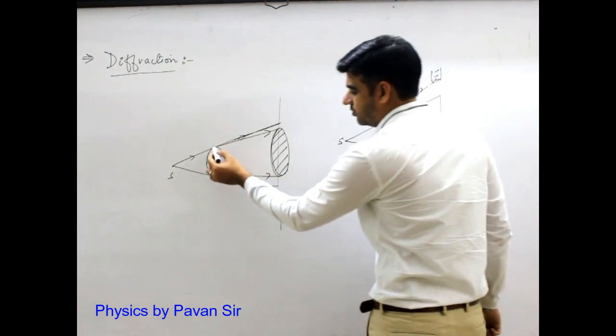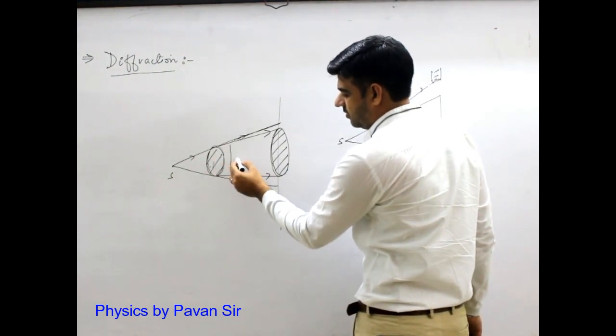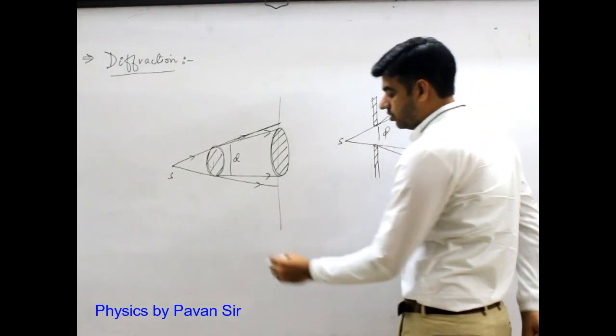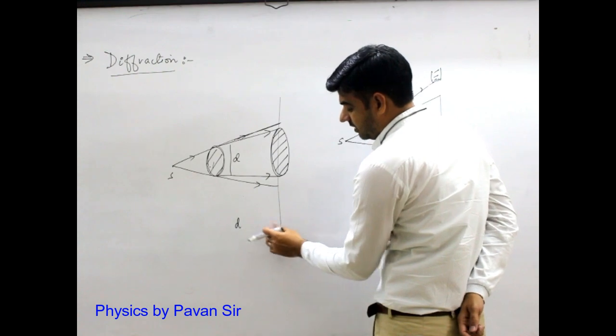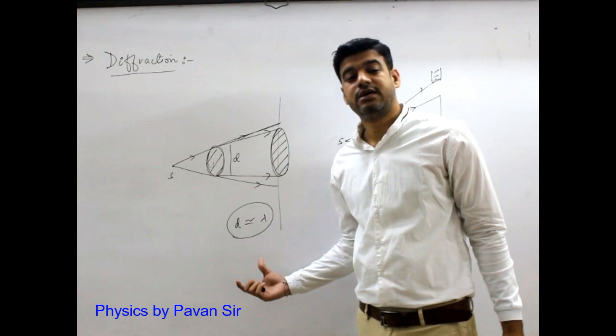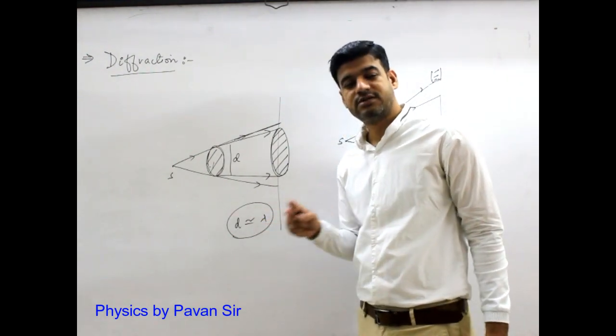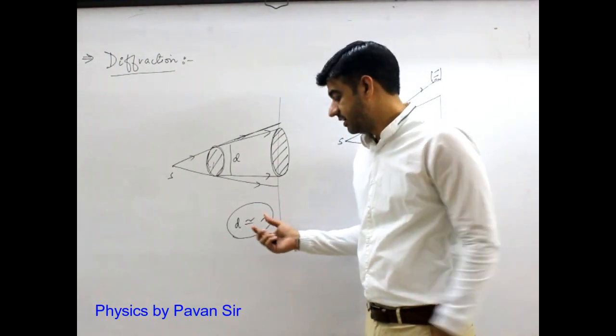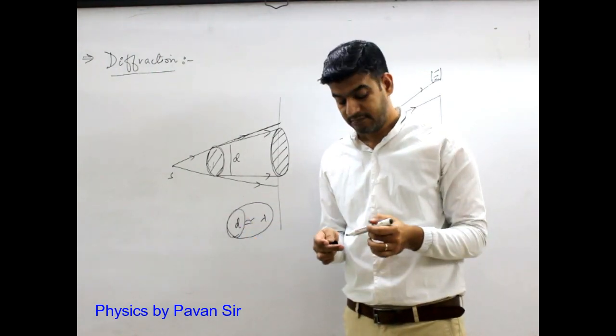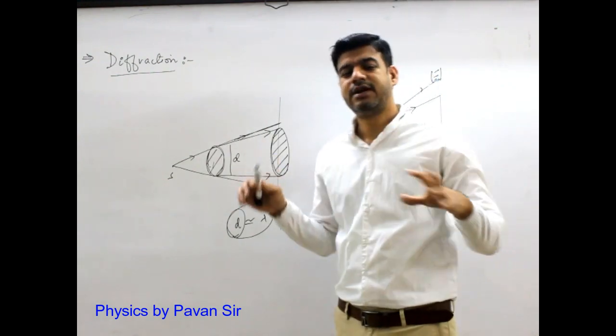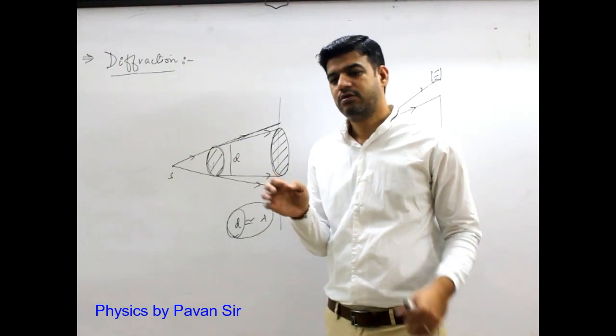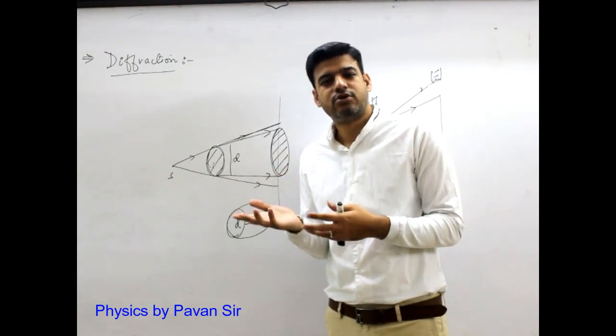Diffraction is more pronounced when the size, suppose if we take the size d, or the size of the obstacle or aperture, is comparable to the wavelength. If this wavelength is more, then the diffraction is more. When the size is larger than wavelength, the diffraction is less.